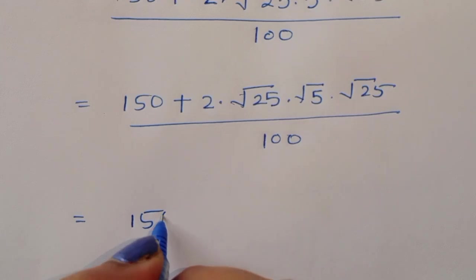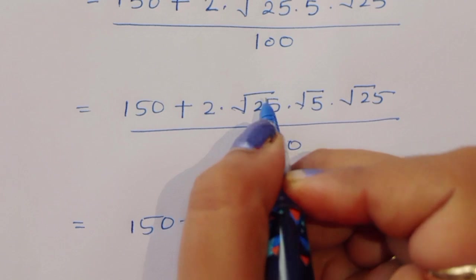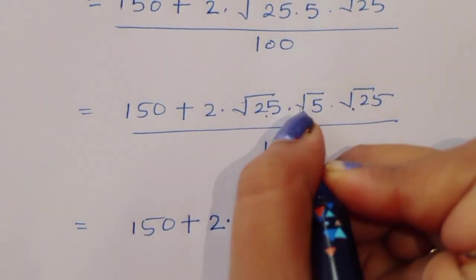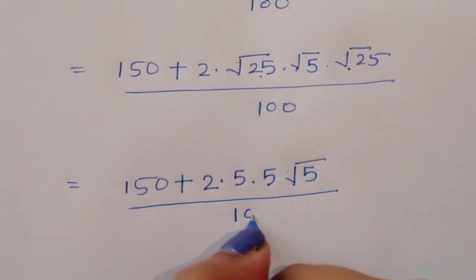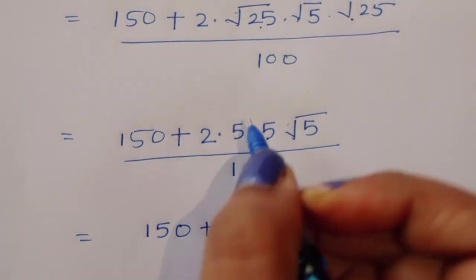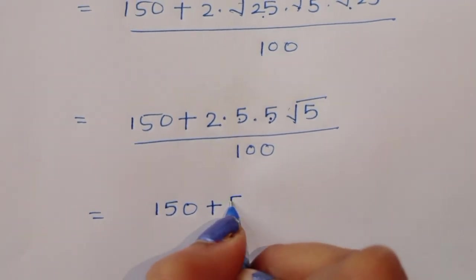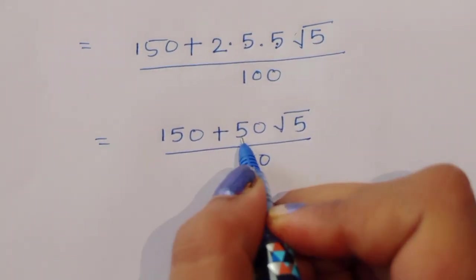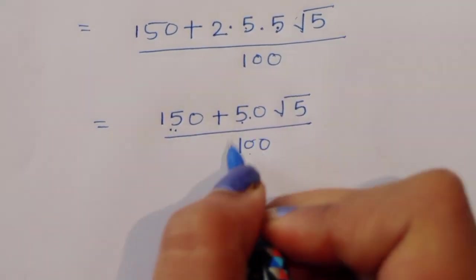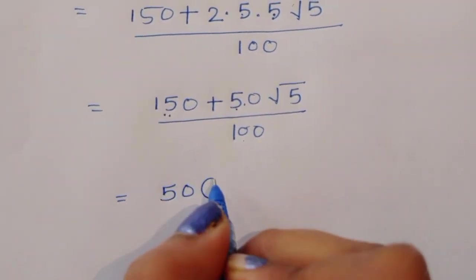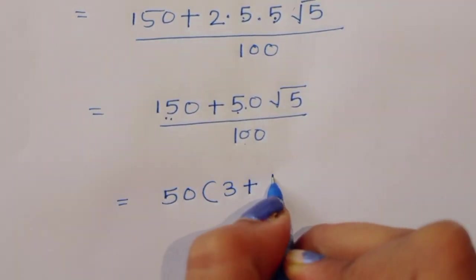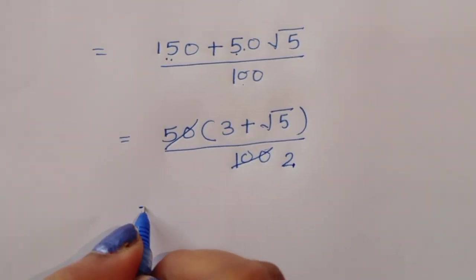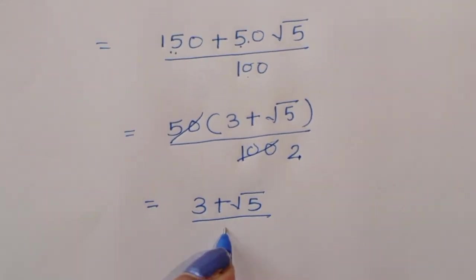This equals 150 plus 2 times square root of 25, which is 5, times 5 times square root of 5, divided by 100. So 5 times 5 is 25, and 2 times 25 is 50. We get 150 plus 50 square root of 5, divided by 100. Taking 50 as a common factor: 50 times 3 is 150, and 50 times square root of 5 remains, so we have 50 times 3 plus square root of 5, divided by 100. Cancelling 50, we get 3 plus square root of 5 divided by 2.